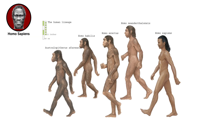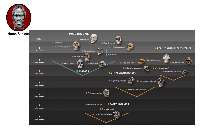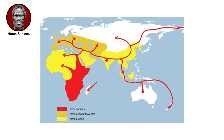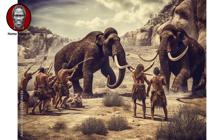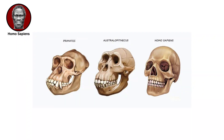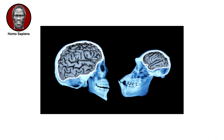Homo sapiens — the species that you and all other living human beings on this planet belong to. During a time of dramatic climate change, 300,000 years ago, Homo sapiens evolved in Africa. Like other early humans living at this time, they gathered and hunted food and evolved behaviors that helped them respond to the challenges of survival in unstable environments. Anatomically, modern humans can generally be characterized by the lighter build of their skeletons compared to earlier humans. Modern humans have very large brains, which vary in size from population to population.